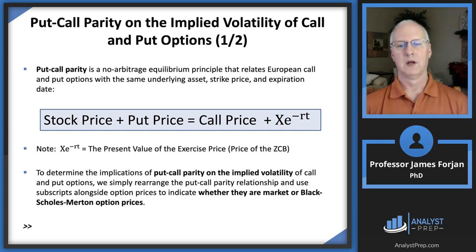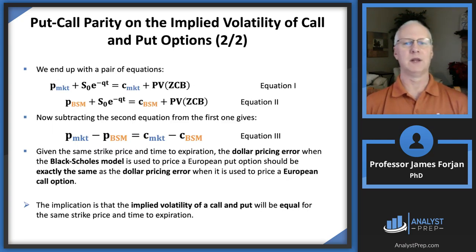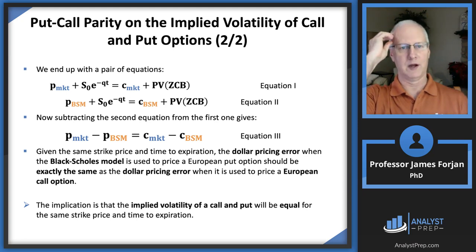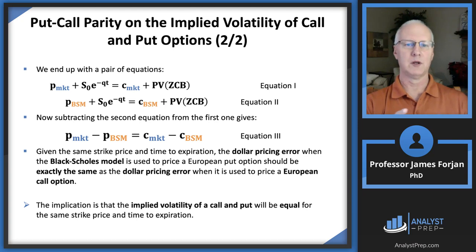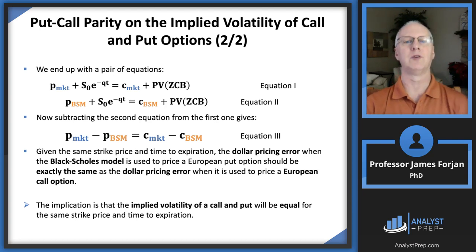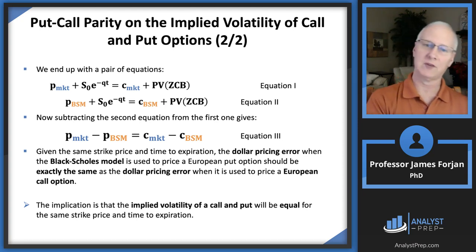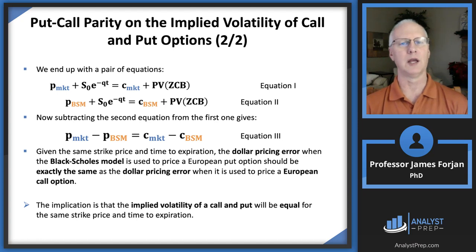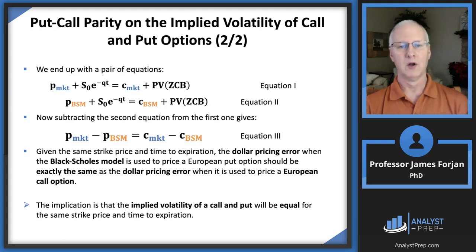We can do some rearranging of put-call parity. We have call and put market prices, which we can observe, and call and put Black-Scholes-Merton estimated prices. If we subtract those two equations, we ought to get zero if the model works perfectly. But since some assumptions in the Black-Scholes-Merton model probably didn't reflect reality, we're probably not going to get zero when we subtract those two equations.